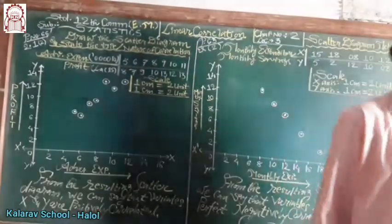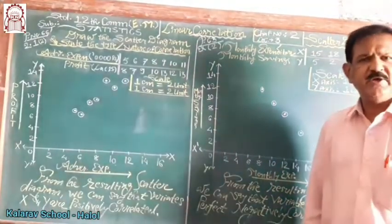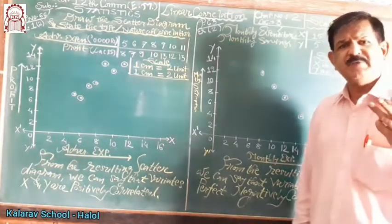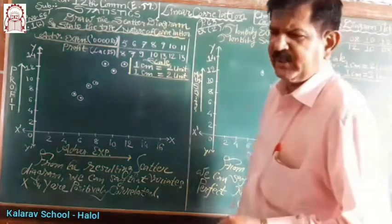Today we are going to study the scatter diagram method for studying the correlation. There are three types or three methods for studying correlation.